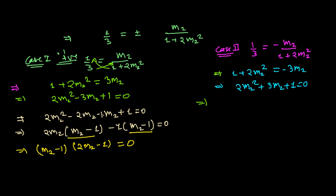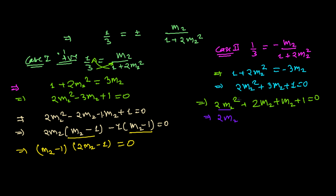For Case 2, factorizing 2m2² + 3m2 + 1 = 0 by splitting 3m2 into 2m2 + m2: 2m2² + 2m2 + m2 + 1 = 0. Taking 2m2 common gives 2m2(m2 + 1), and 1 common gives 1(m2 + 1). So (m2 + 1)(2m2 + 1) = 0.